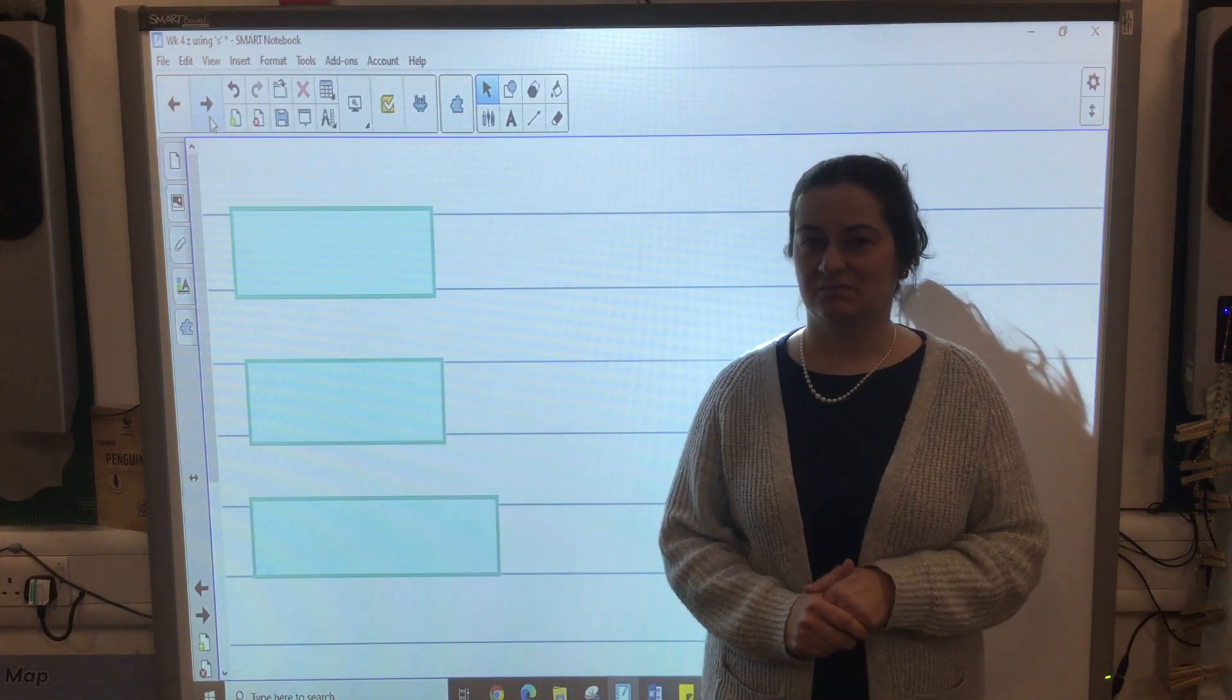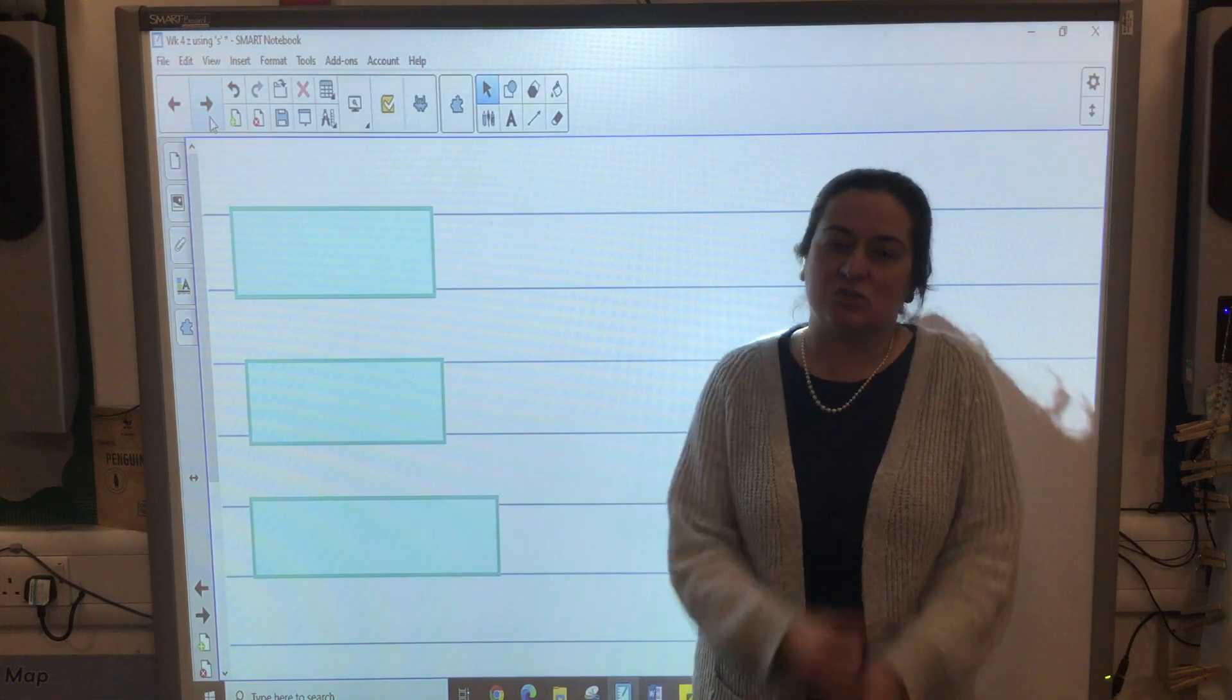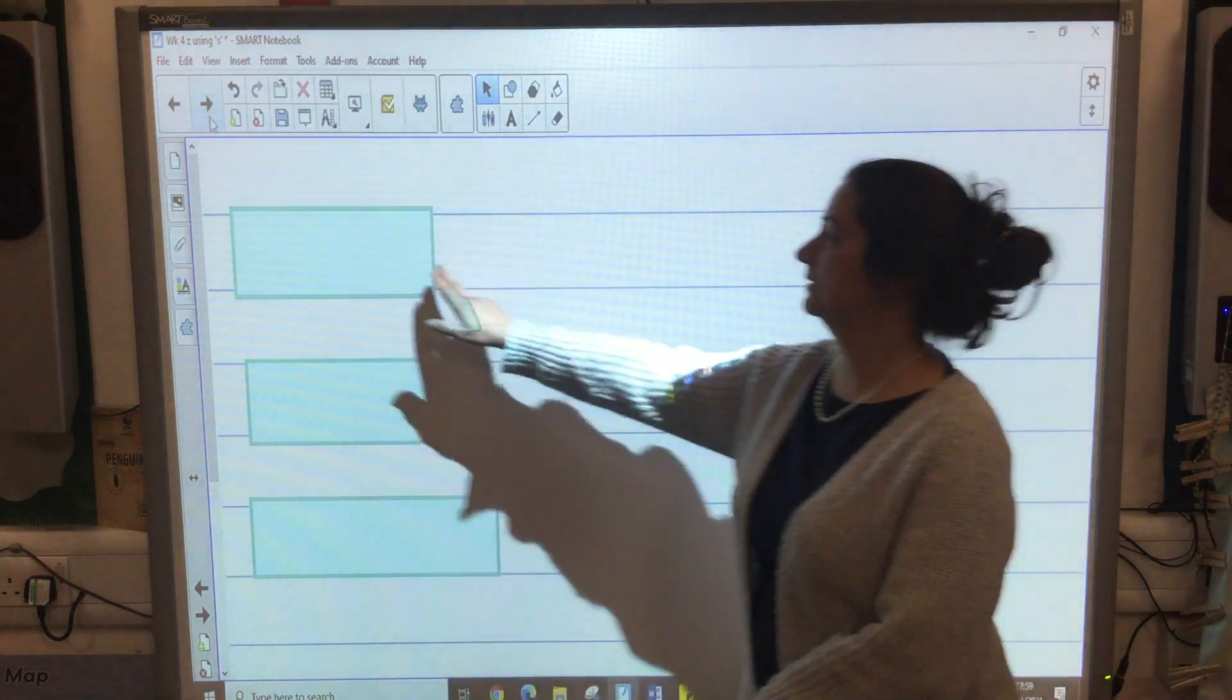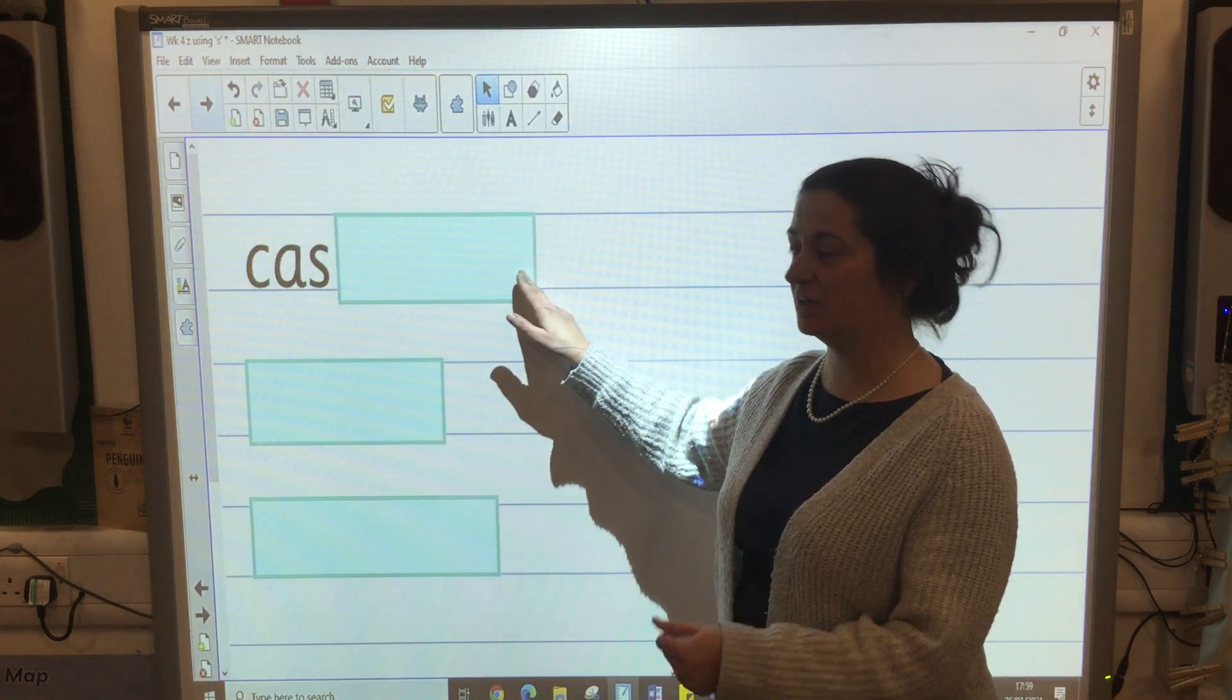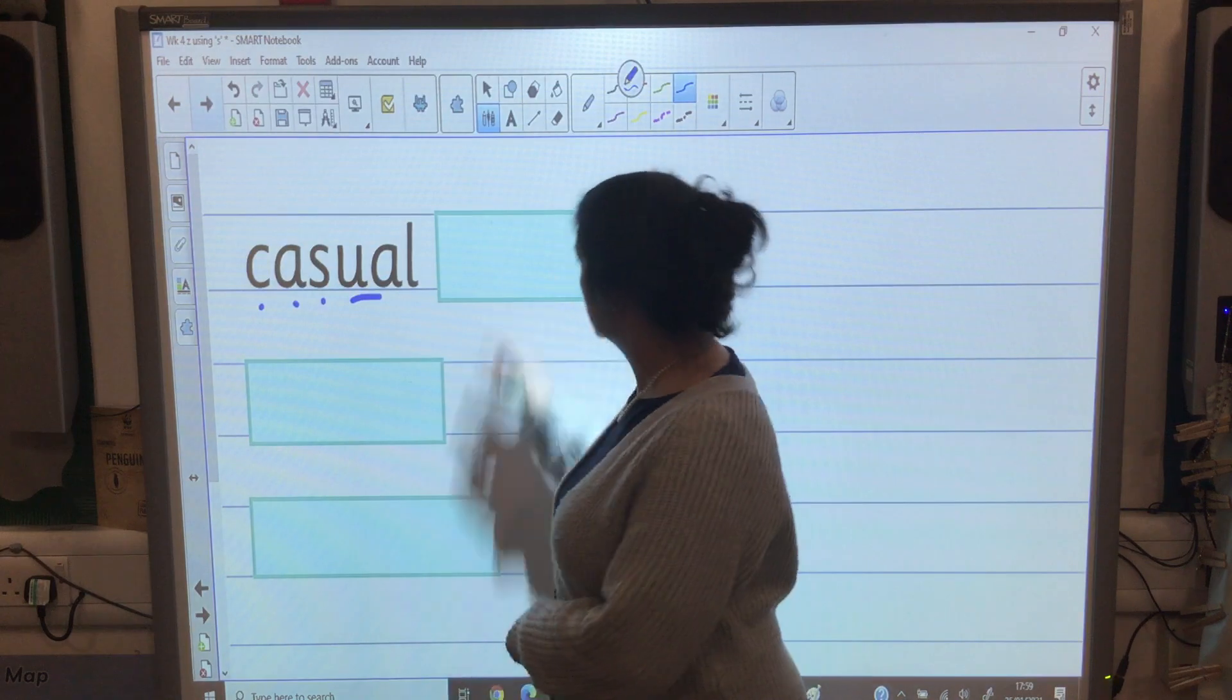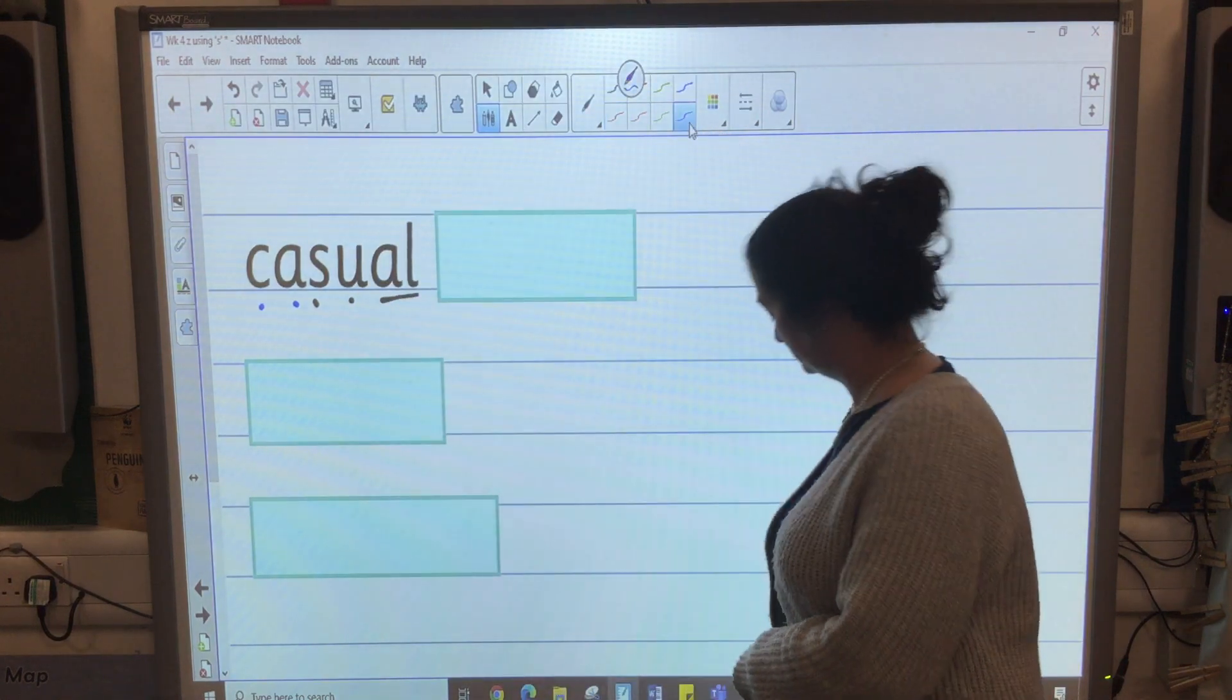On the next line try and write the word casual. When I'm at home I wear my casual clothes, maybe my jeans or my comfy sweater. Casual. Let's check and change. C-a-s-u-a-l. Have you remembered that part? Let's put our sound buttons in. C-a-s-u-a-l. Casual.